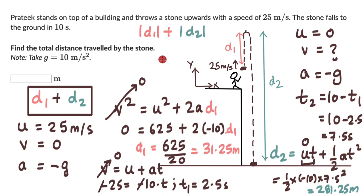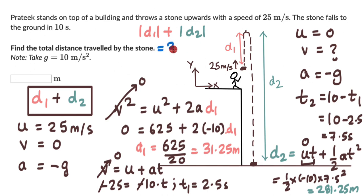The total distance is D1 + D2 = 31.25 + 281.25, which equals 312.5 meters.